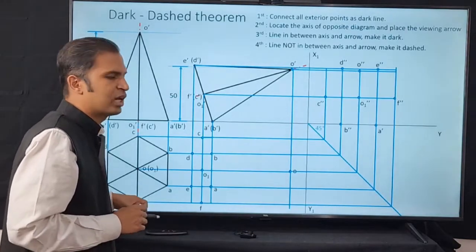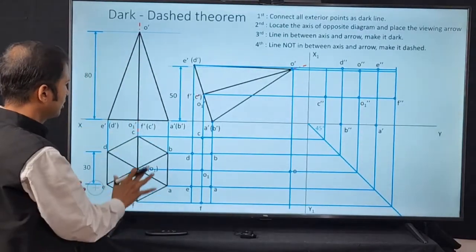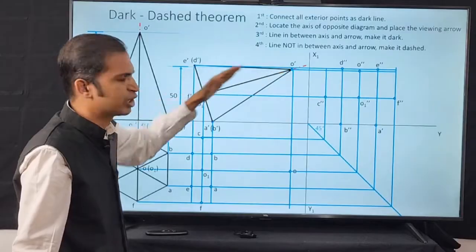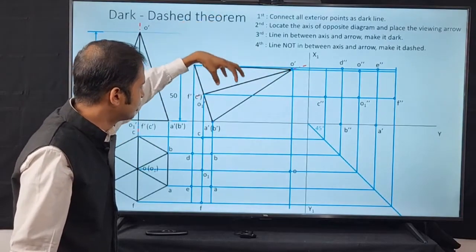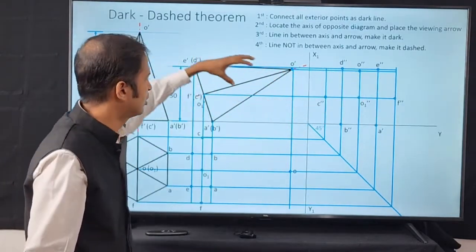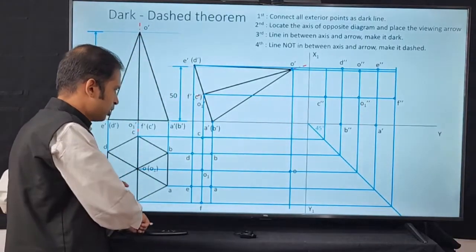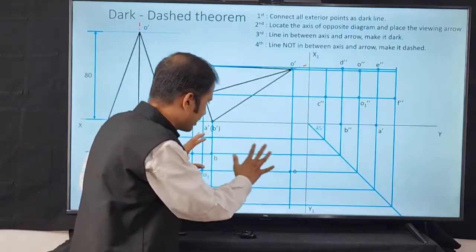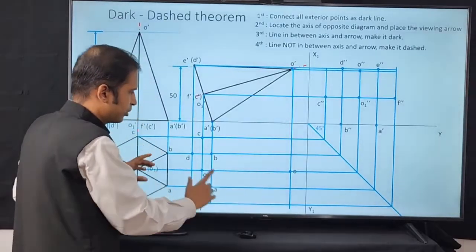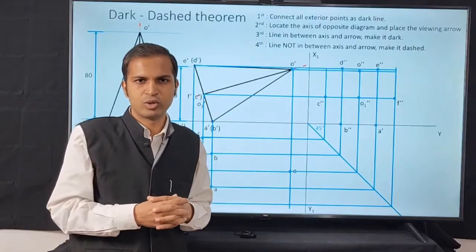Here is a sample solved problem — a hexagonal pyramid inclined at some angle with respect to its axis. We want to project the top view and sometimes also the side view. When students draw this diagram, they get confused about what to draw as hidden and what to draw as dark. Let's see how to solve this using the four-step rule.